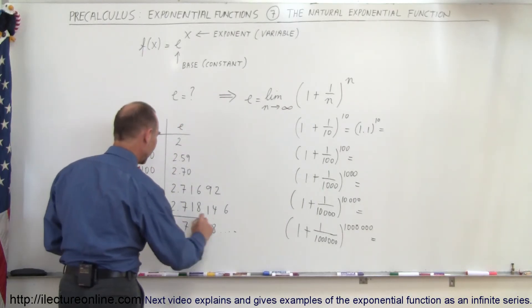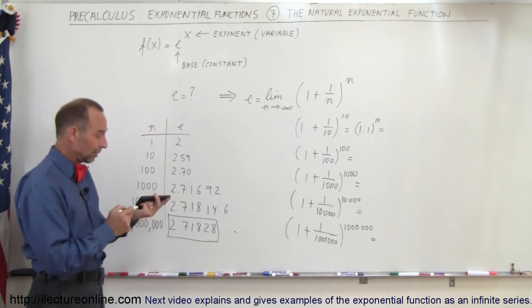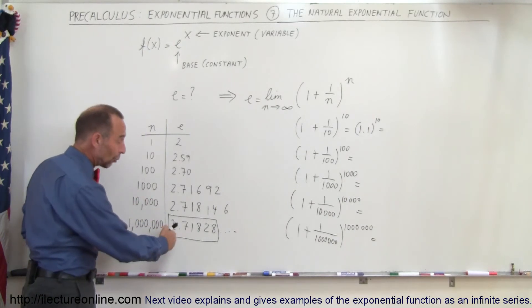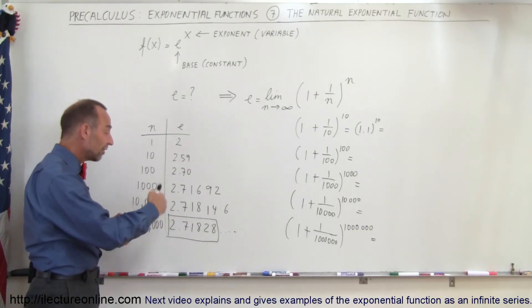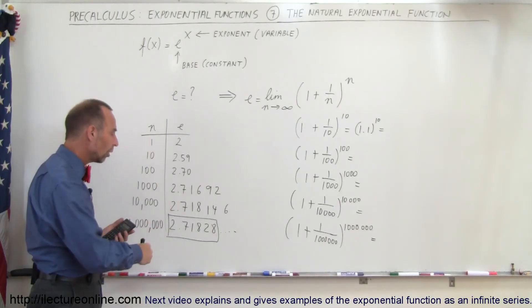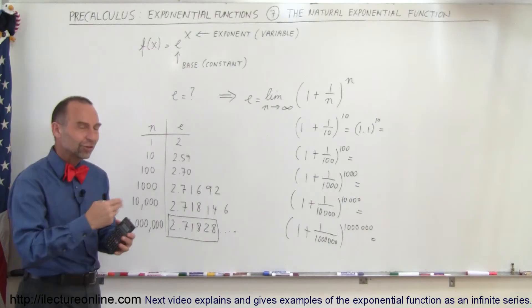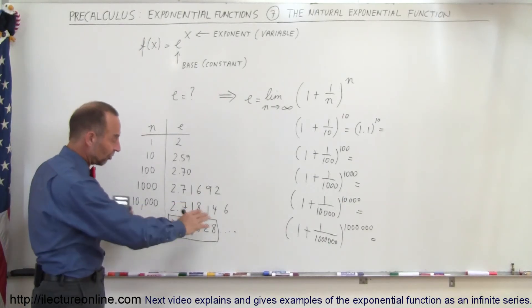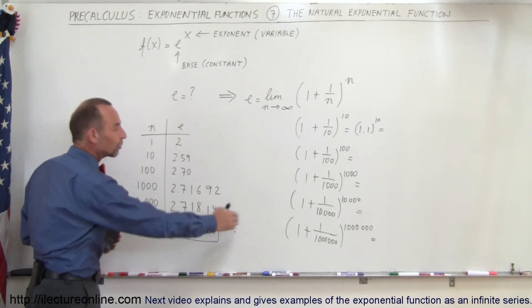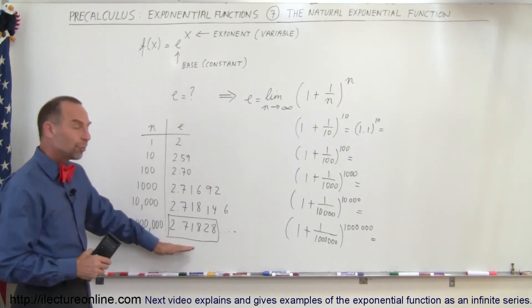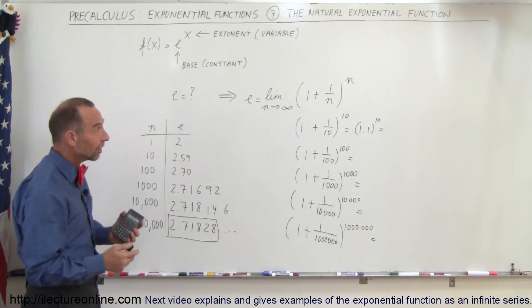So 2.71828 and so forth. So this becomes very close to the number e that we typically use in any sort of mathematics. Typically we don't use quite that many decimal places, but the number is 2.7182818 and so forth. You can see that it's not a repeating decimal, it's just like the number pi. There's no particular way in which we can predict what the numbers are, we simply have to calculate it.